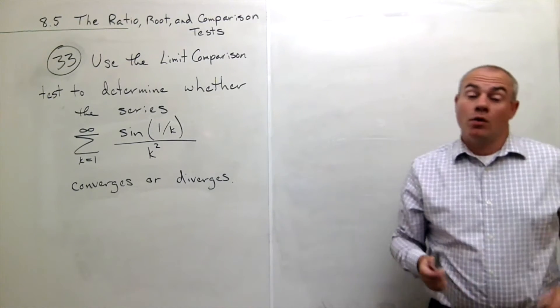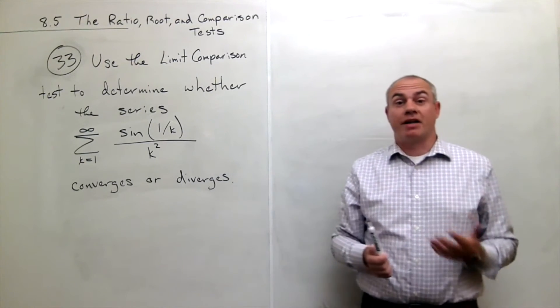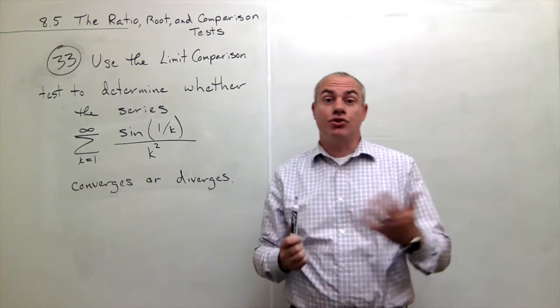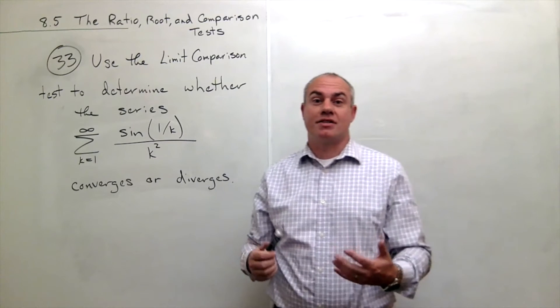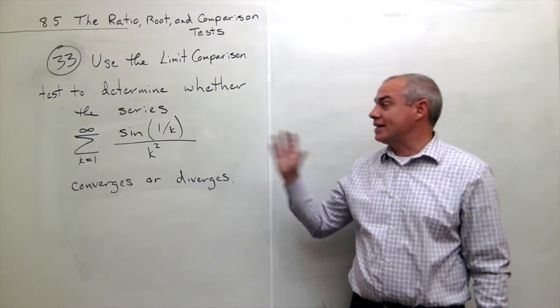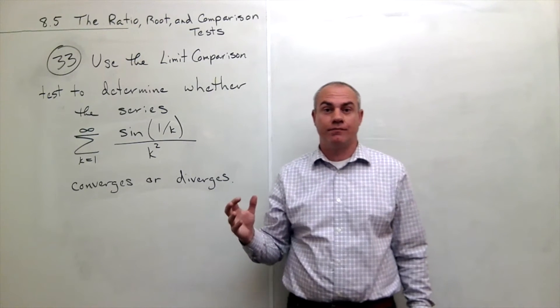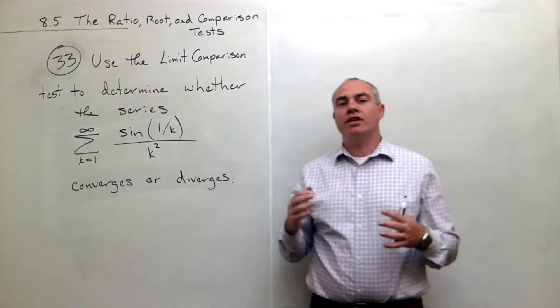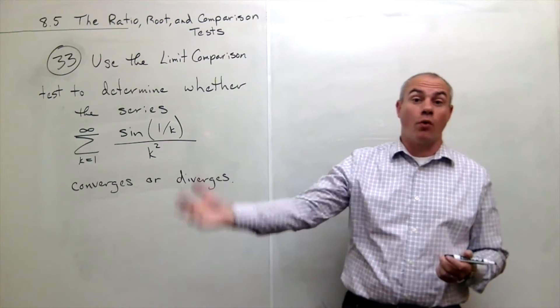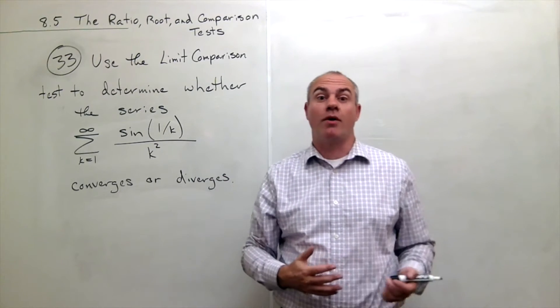One of the trickier things about the limit comparison test, and just comparison tests in general, is you, as the mathematician, have to make a choice on what to compare this thing to. And there's not really a right answer or a wrong answer so much as some things will work and some things will not work.